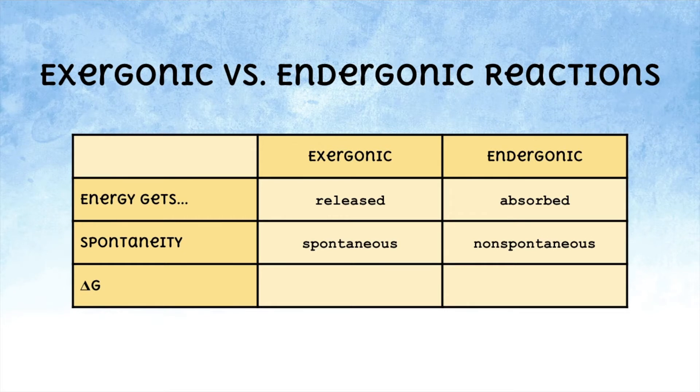In an exergonic reaction, delta G quantifies the amount of energy released as a negative value, whereas in an endergonic reaction, delta G quantifies the amount of energy that must be absorbed as a positive value.